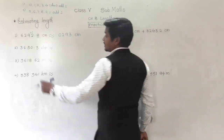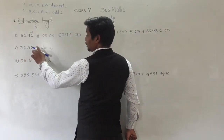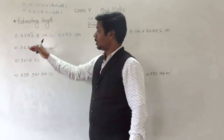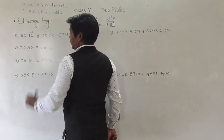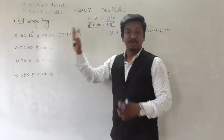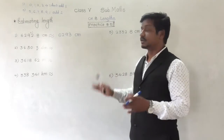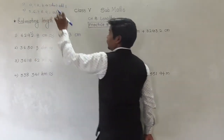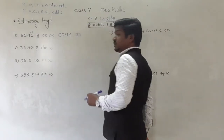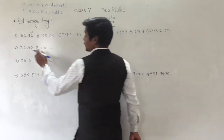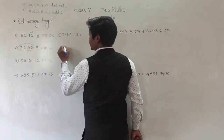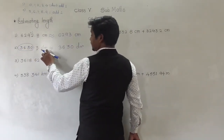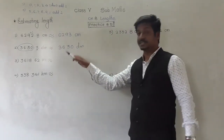Next, 3630.3 decimeters — what is it approximately equal to? After the decimal point, the first digit is 3. When we round off, the decimal part will disappear. Since 3 falls in the first rule (0, 1, 2, 3, or 4), we don't add 1. So the whole number part remains as it is: 3630. Therefore, 3630.3 decimeters is approximately equal to 3630 decimeters.